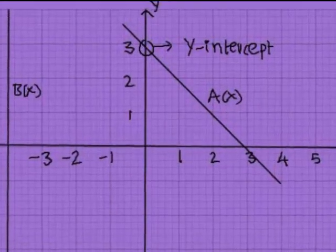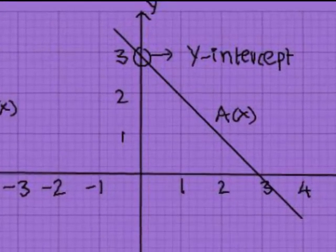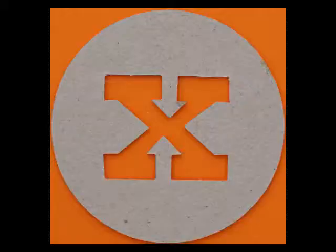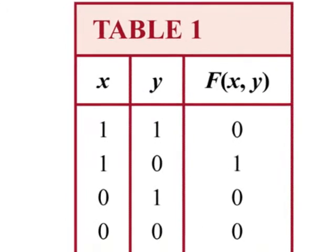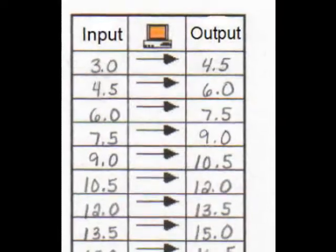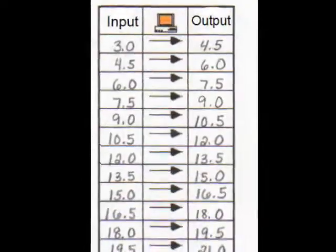The b is the y-intercept, which is the coordinate point where the line crosses the y-axis. The x and y are always left as variables in the equation of the line. The x represents all possible inputs for the equation, and the y represents the corresponding outputs for the equation.